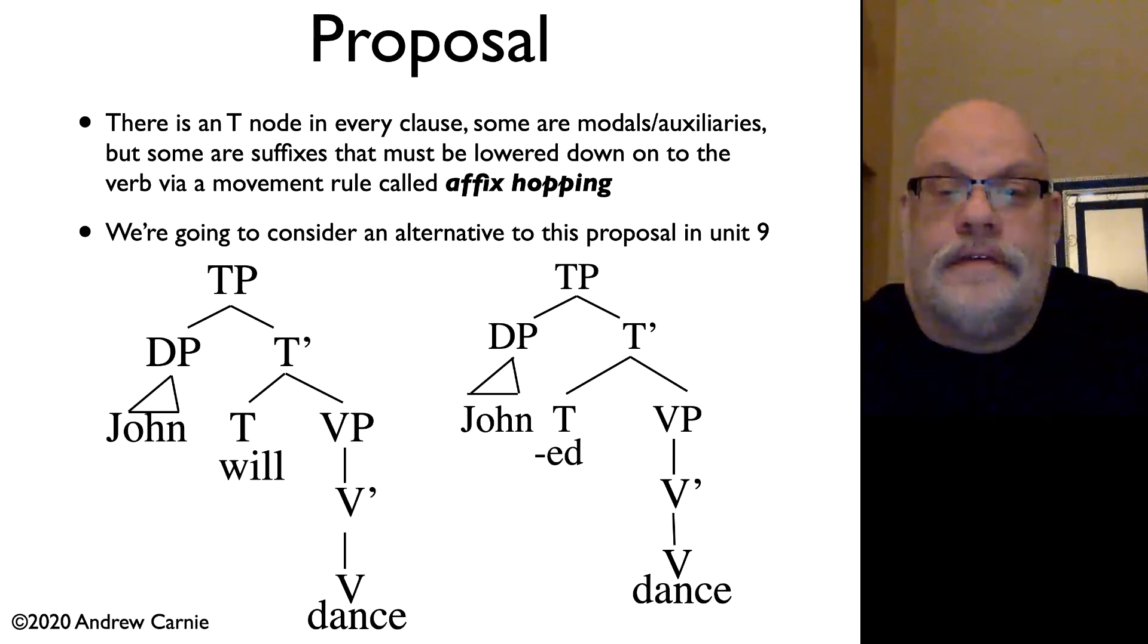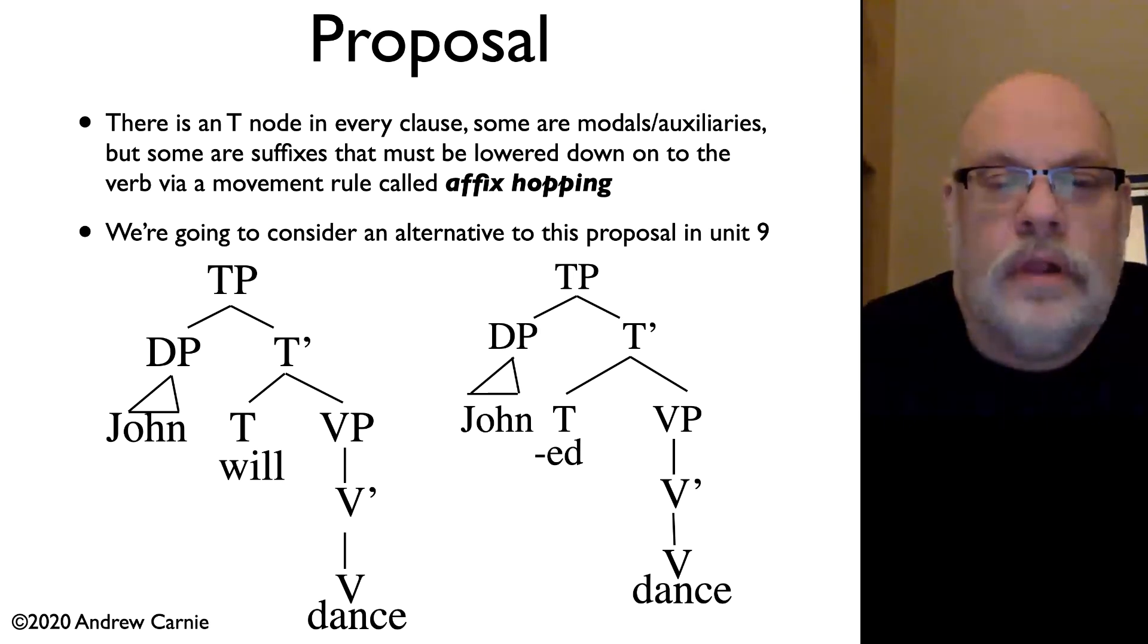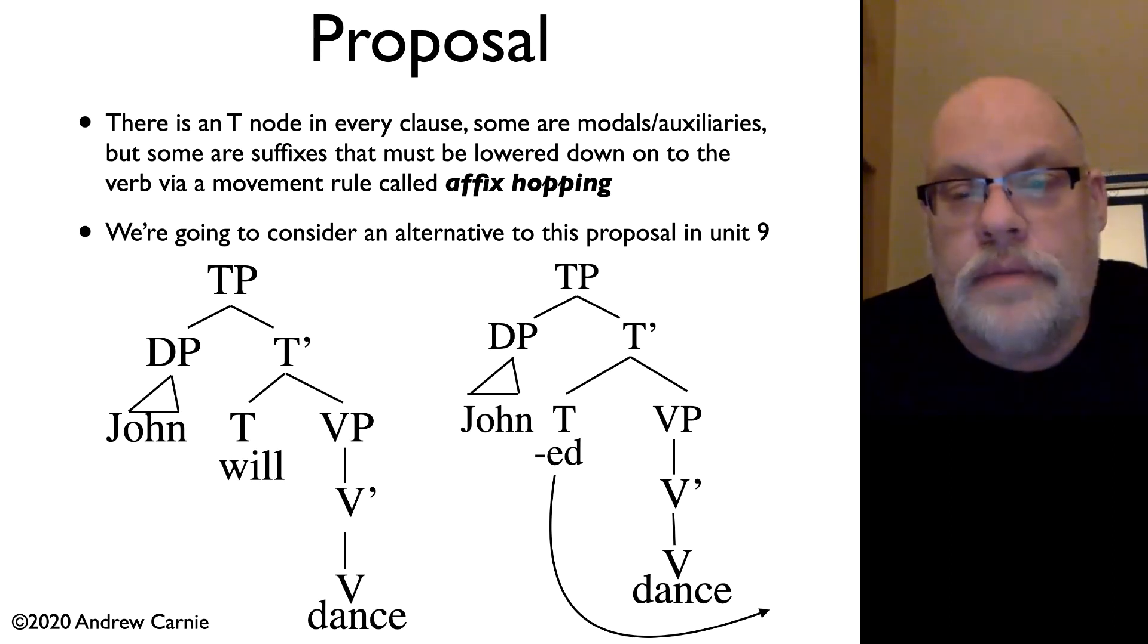Affix hopping is the idea that affixes are generated in the T node and then they literally lower down onto the verb. They hop down one position. So, while with a modal we have a situation like the tree on the left where the modal occupies the T node, when we have an affix we're going to put that affix in the T node, but we have to get it down onto the verb and we have this special rule called affix hopping that takes the affix and moves it down.